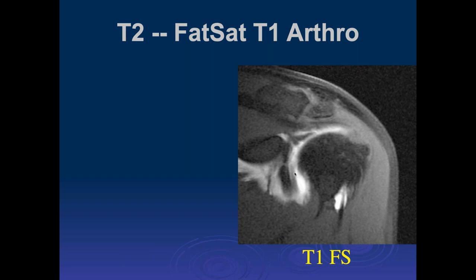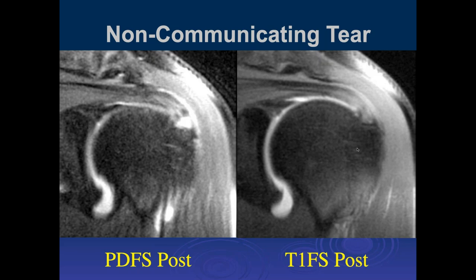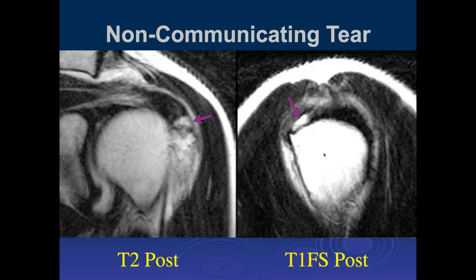If you put contrast in and only do fat suppressed images, you must look carefully at fluid sensitive images. I've seen places where MR arthrography is done with T1 fat suppressed in three planes only — in that situation these bursal site partial tears may not be detected at all. If you cut too many corners with MR, you can defeat your purpose. Bursal site partial tears should be found even with arthrography if you do PD fat sat images. The T2 sequence also shows bursal site partial tears, and the sagittal plane shows this as well.